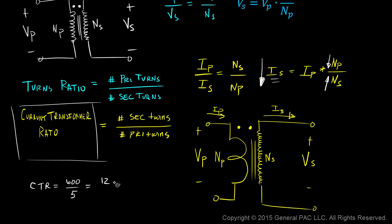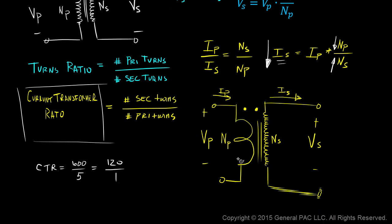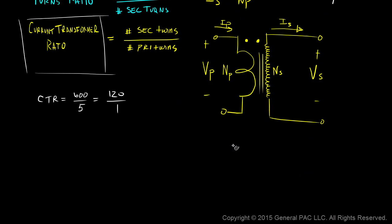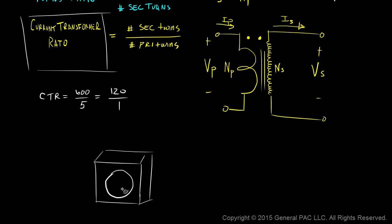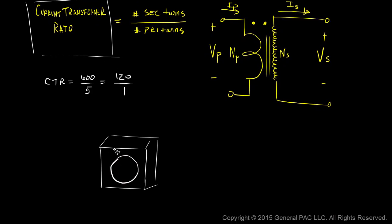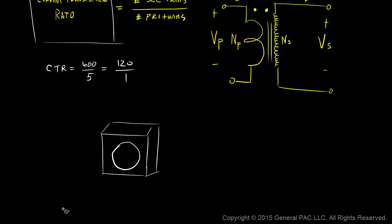Another way to express 600:5 is 120 to 1 — meaning 120 secondary turns and only 1 primary turn. A type of current transformer called the window-type current transformer has a large window, and a conductor flows directly through it, with the source on one side and the load on the other.